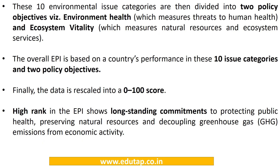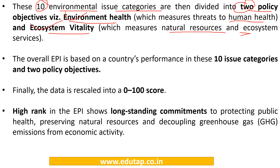The 24 individual metrics are aggregated into 10 major environmental issue categories, which are further divided into two policy objectives: environmental health and ecosystem vitality. Environmental health measures threats to human health, while ecosystem vitality measures natural resources and ecosystem services.